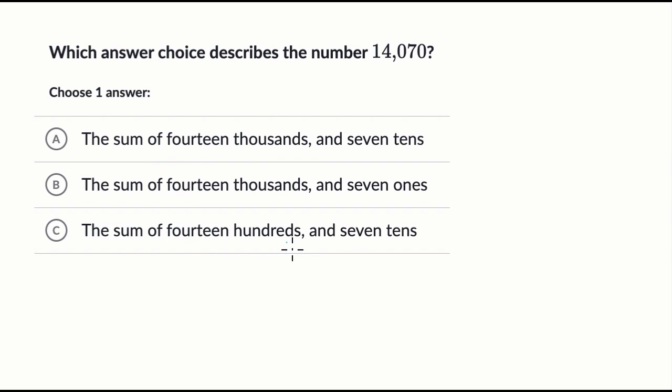I have fourteen thousands here, and you normally wouldn't say it that way, but let's just try to break it out here. So if I have fourteen thousands, as choice A says, that would be 14 and then thousands, and then to that I'm adding seven tens.